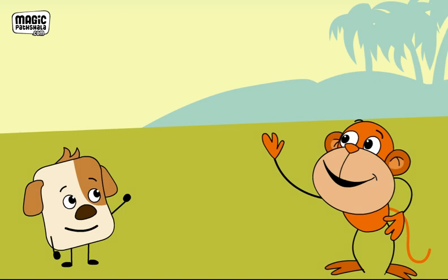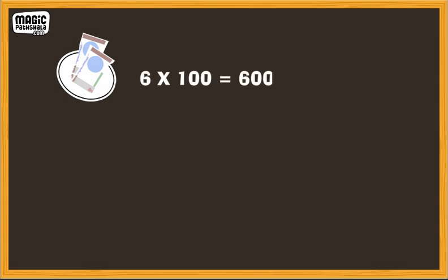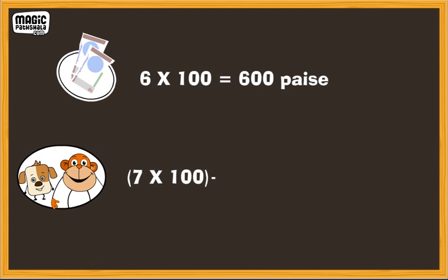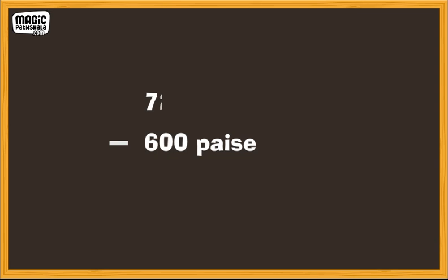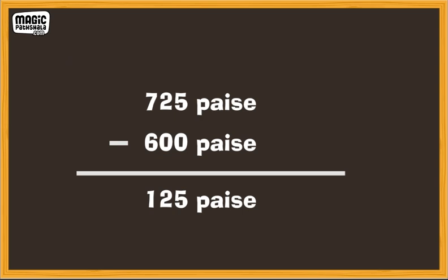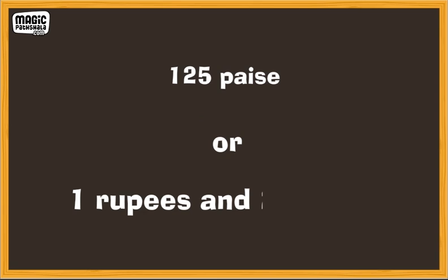Is this amount enough for buying two tickets? How much change will they get? First, convert the amount into paise. 6 rupees will be 600 paise, and Rs. 7 and 25 paise will be 725 paise. Now, subtract 600 paise from 725 paise. We get 125 paise, or Rs. 1 and 25 paise.